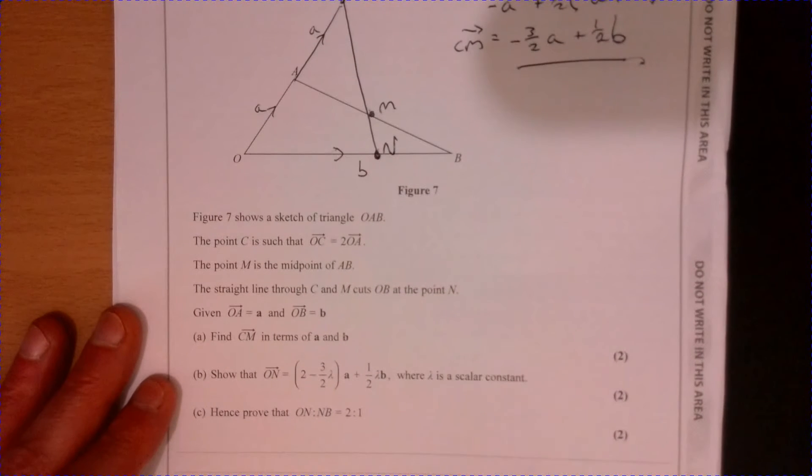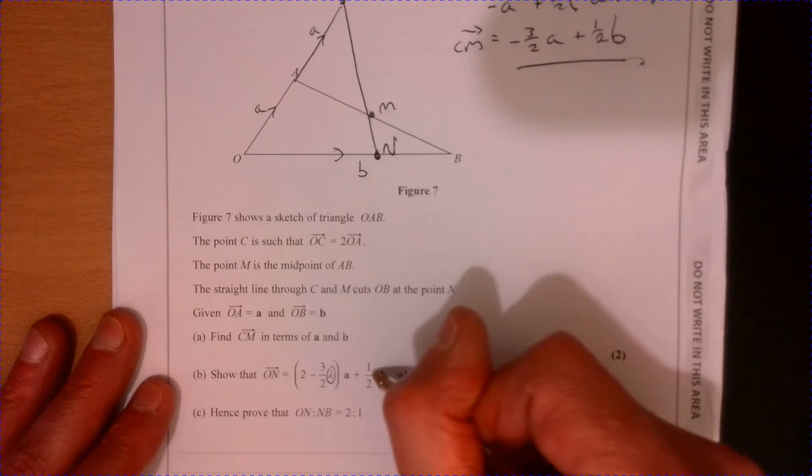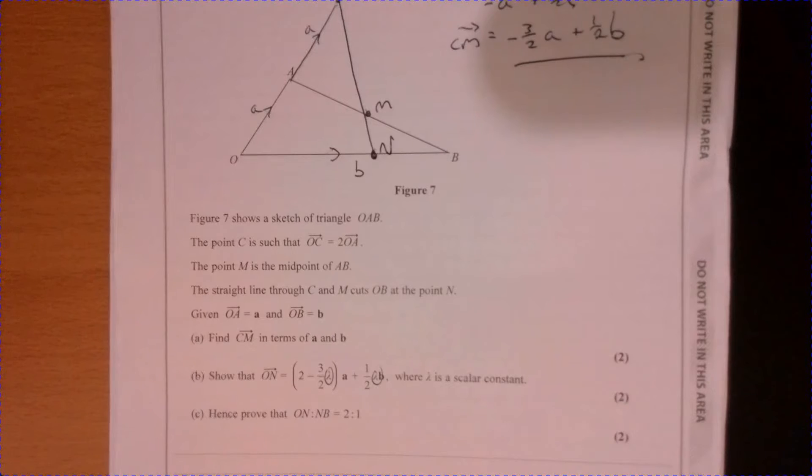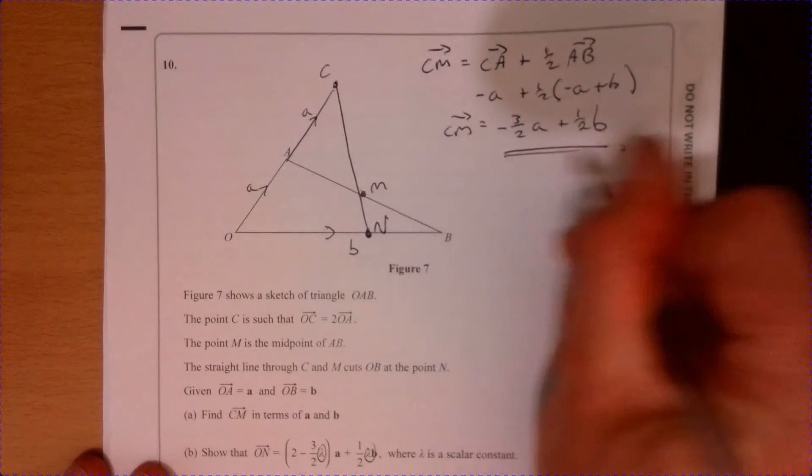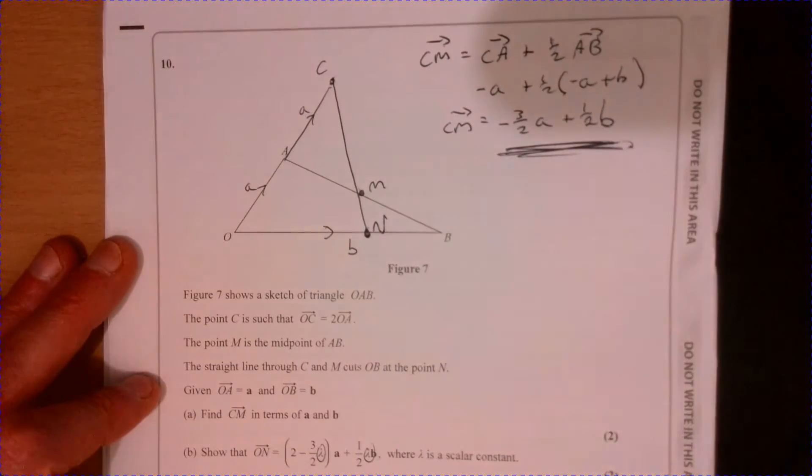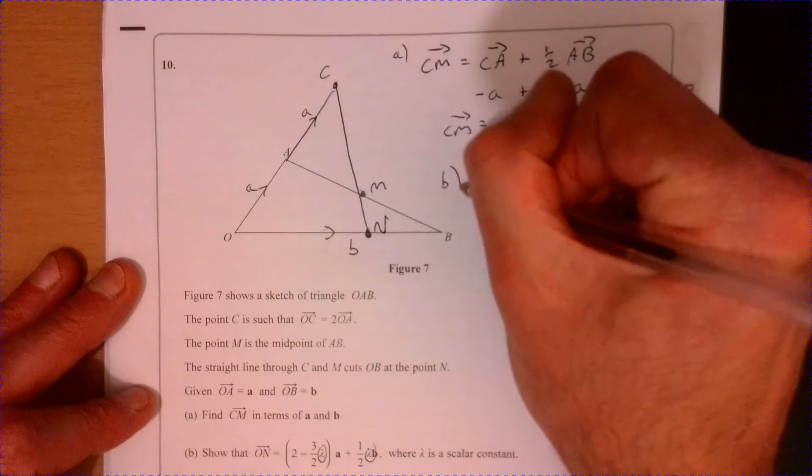Now when we go to part b, part b looks a little bit scary. Now this thing here is just a scalar, okay, so don't worry too much about it. It looks a little bit scary. Just think about why they've asked you to work this out. There's usually a reason why they've asked you to work something out.